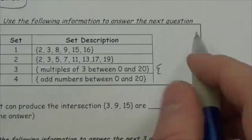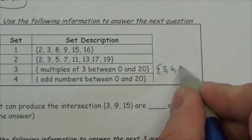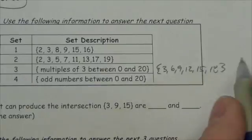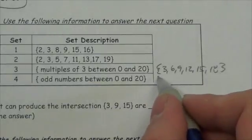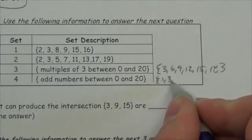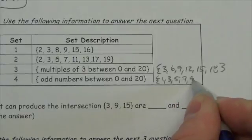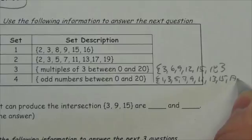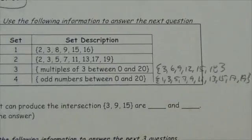Multiples of 3 between 0 and 20 will be {3, 6, 9, 12, 15, 18}. That's it. Odd numbers between 0 and 20 will be {1, 3, 5, 7, 9, 11, 13, 15, 17, 19}.